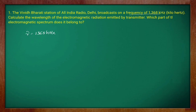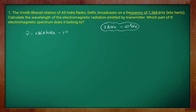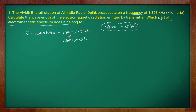We know the SI unit of frequency is Hz. Since kHz means 10 to the power 3 Hz, converting it gives us 1368 into 10 to the power 3 per second. They have asked us to identify which part of the electromagnetic spectrum it belongs to after calculating the wavelength. In order to find wavelength, we use the formula lambda is equal to C divided by nu.